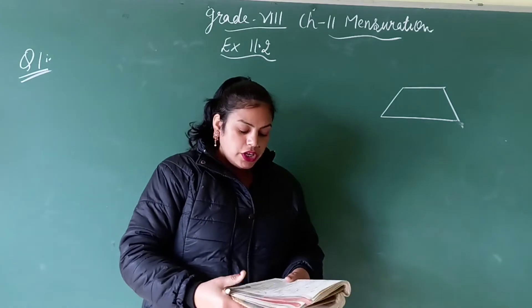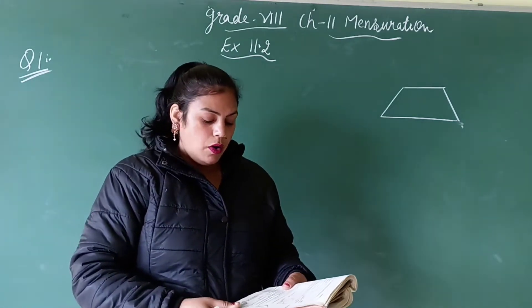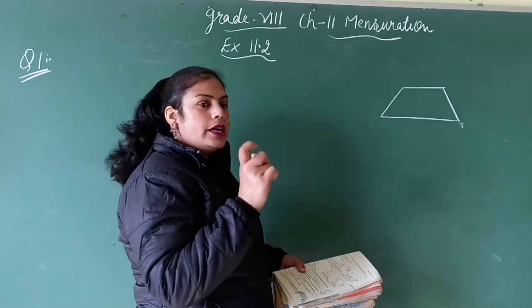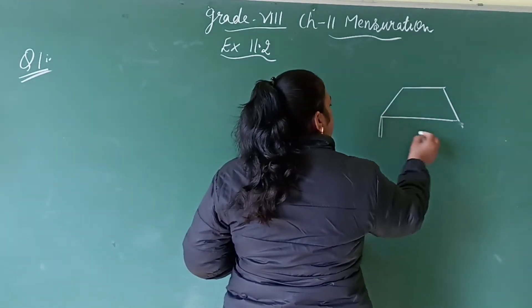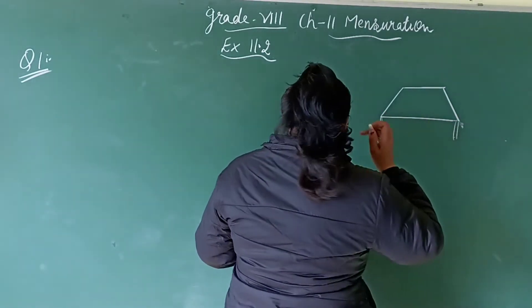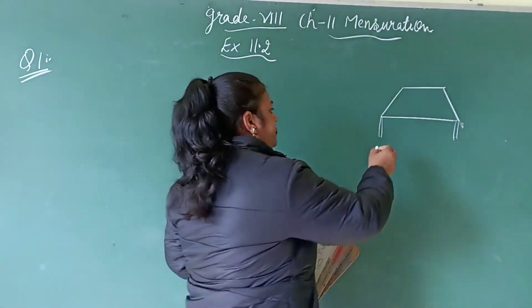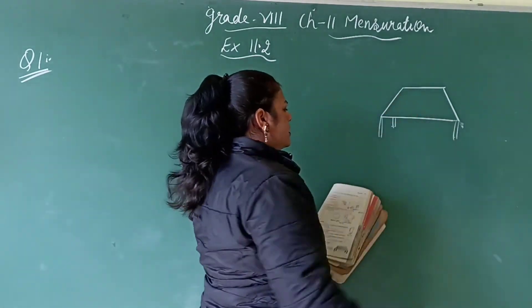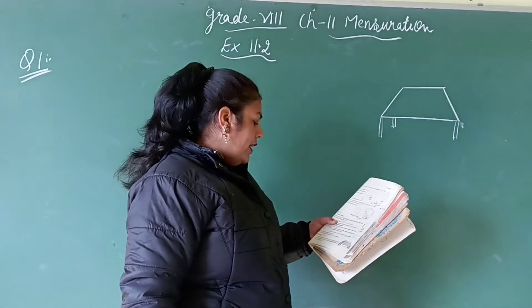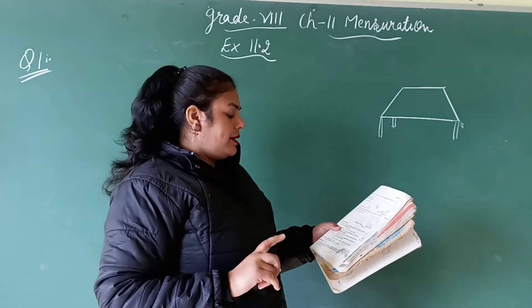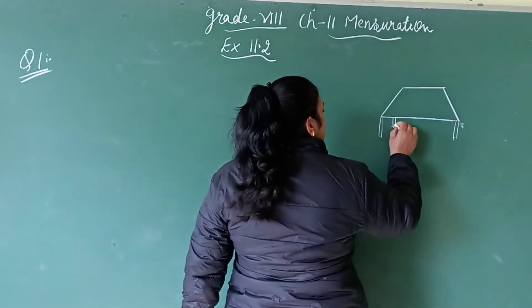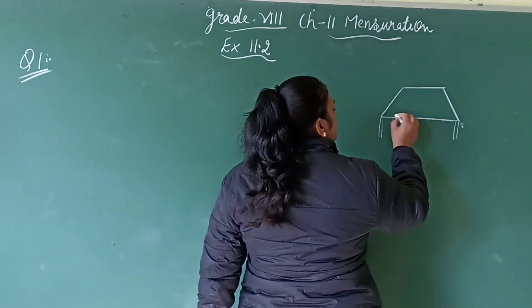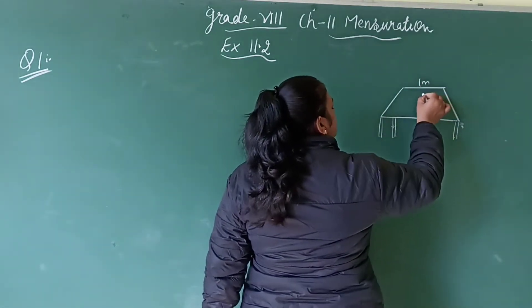So now your first question is, you have the shape of table top, surface of a table is trapezium. This is a table. And this is its table top and we need to find its area. If its parallel sides are 1 meter and 1.2 meter.